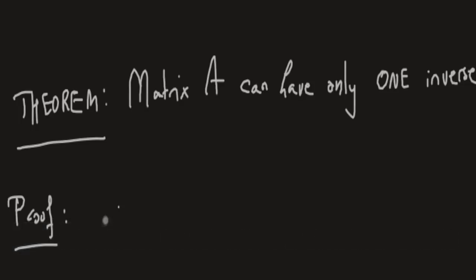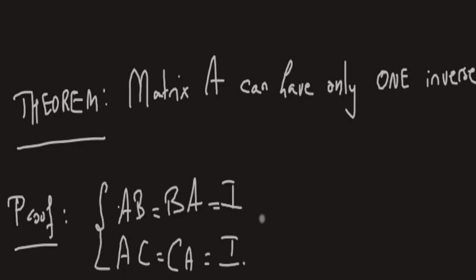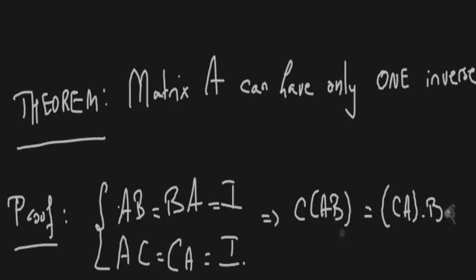One technique of proving uniqueness of something is assuming there are two of this something, and then arriving at a contradiction. So let's say we have two inverses, B and C. If we look at C times AB, this equals CA times B. Now AB equals I, and CA also equals I — by assumption, AB is I and CA is I.